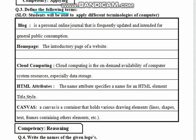Your solution will be to apply different terminology. The first word is blog. A blog is a personal online journal that is quickly updated and intended for general public consumption.